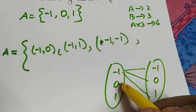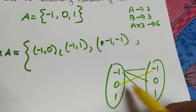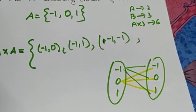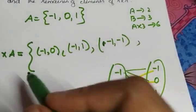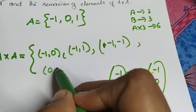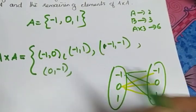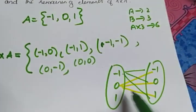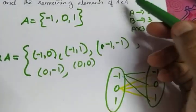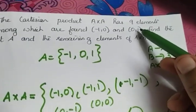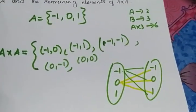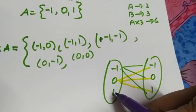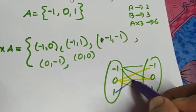Go to the second element, zero. Zero maps to minus one, zero, and one, giving us (0,-1), (0,0), and (0,1). (0,-1) we write next, then (0,0), and (0,1) is already given in the question so we can note it.